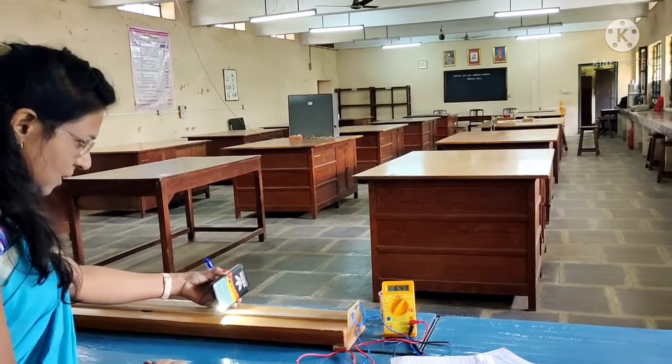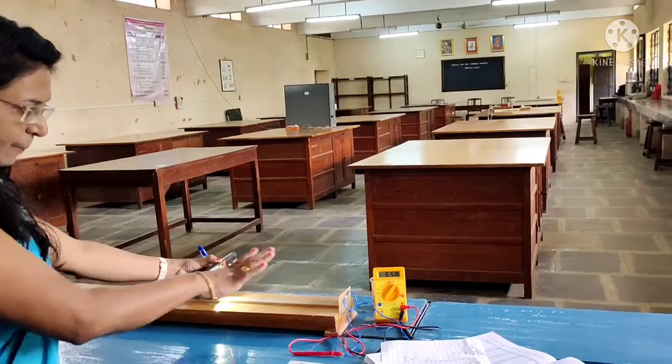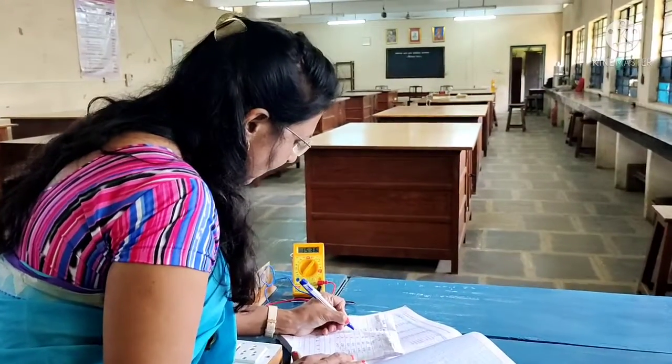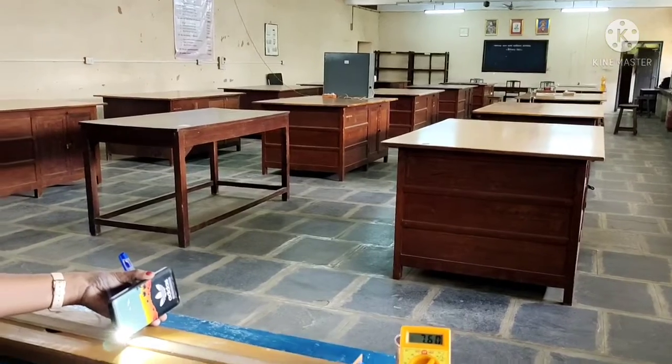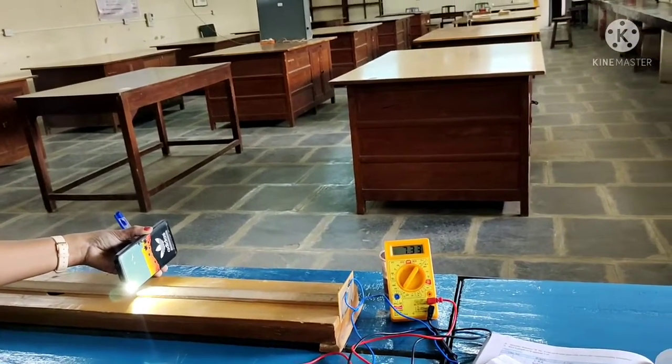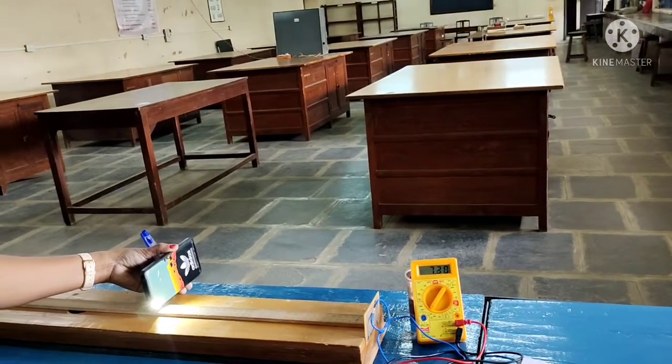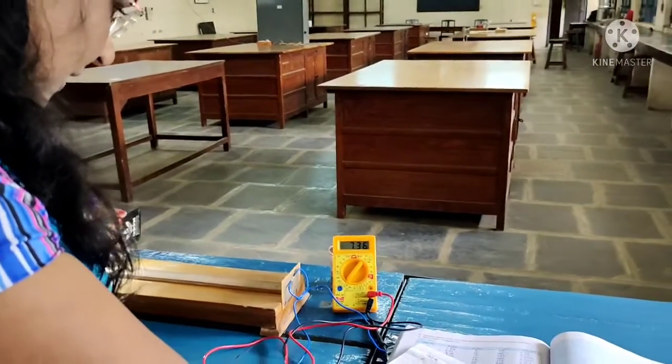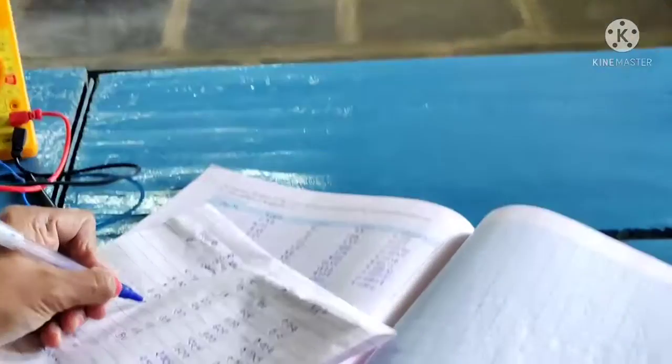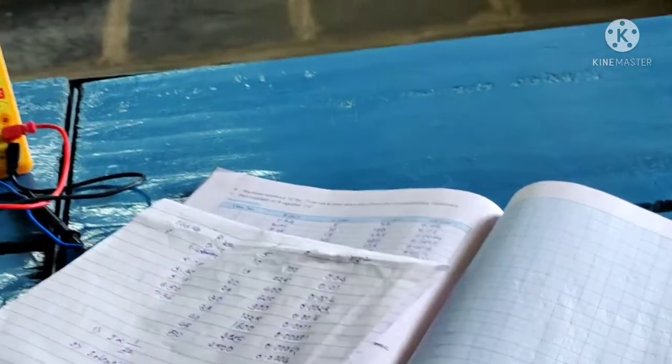Next, for 30 centimeter distance, 30 centimeter distance, 6.50.